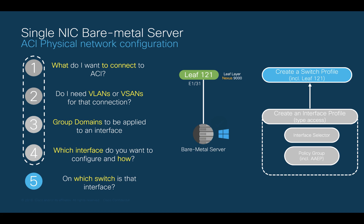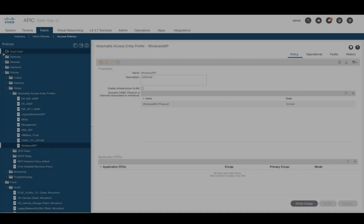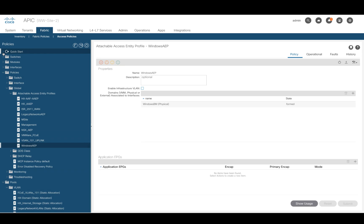We just completed the configuration our single NIC server requires for the physical network. As you can see, the concepts are similar to the configuration we used to do on the CLI before. Keep in mind that you can reuse most of the objects we just created for other ports and switches, even using APIC CLI or via the API as well. You must be wondering by now: is there an easier way to do all this with fewer steps? And the answer is yes.